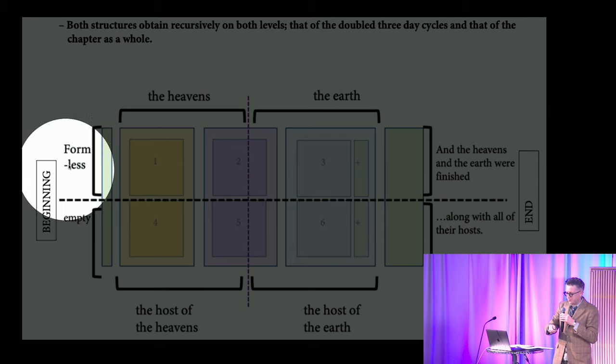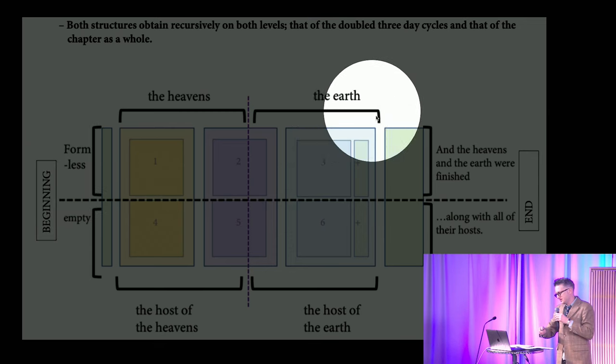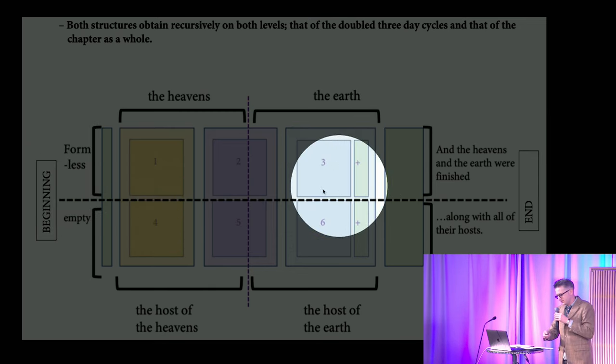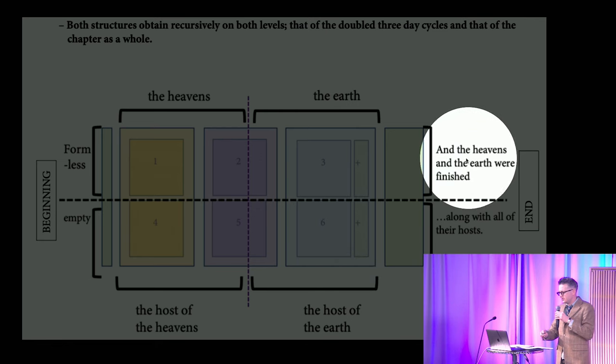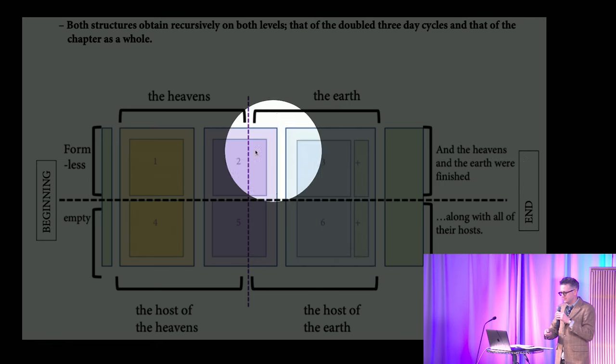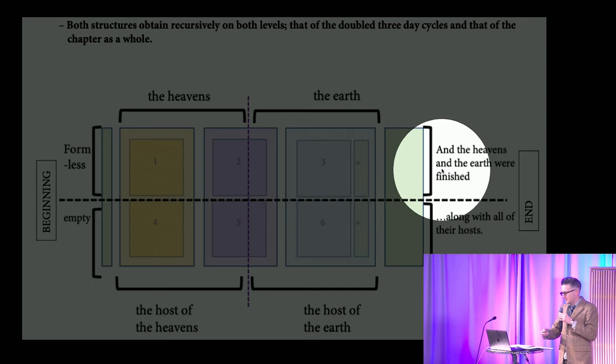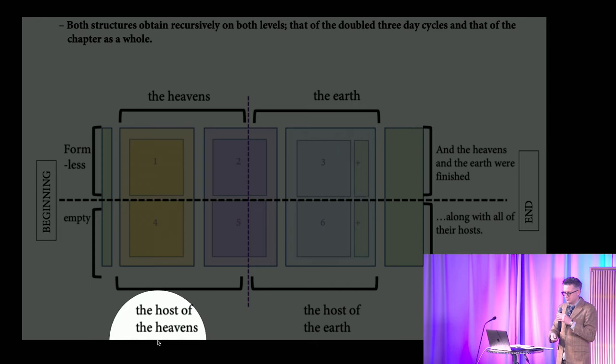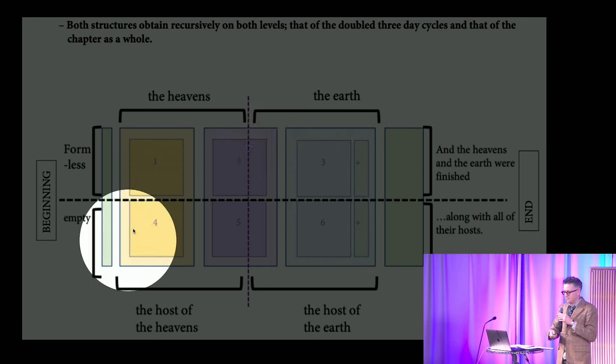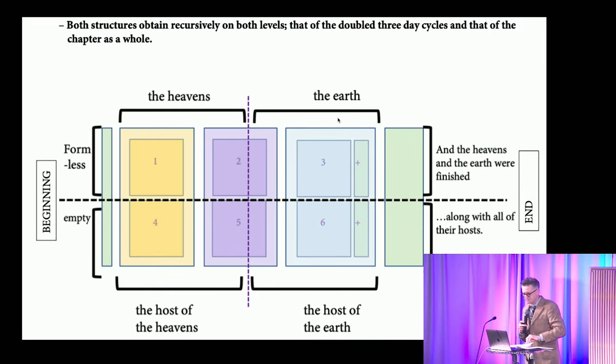Different relationships come into focus, both between the days in each cycle and between the two cycles of days, depending on whether one is considering the relationship from the perspective of the alternation structure, A, B, C, A prime, B prime, C prime, matching domain with inhabitants and moving progressively from forming to filling, or from the standpoint of the inversion symmetry, in which the mirror correspondence between celestial and terrestrial realms is most prominent. It is almost like an origami structure, where it begins with what is formless and empty, the first set of days gives it form, the second set of days gives it filling, and it concludes with the heavens and the earth were finished along with all their hosts. It is a contemplative matrix of a kind.